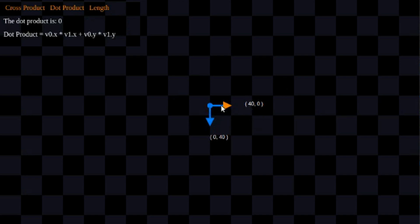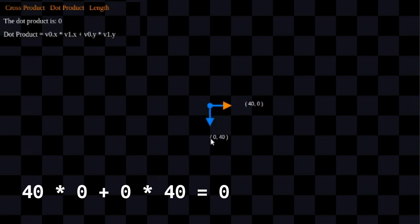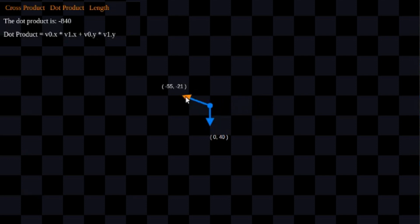We can see that the X value of the yellow vector is going to be 40. So 40 multiplied by the X value of the blue vector, which is 0, is going to result in 0. When we add 40 times 0 — which is 0 — to 0 times 40 — which is also 0 — we get 0, and we have a dot product value of 0. It doesn't matter which side we're on; so long as the angle is 90 degrees, we get a dot product of 0.